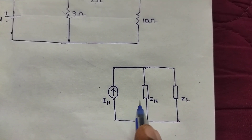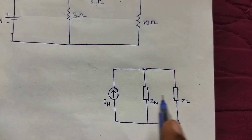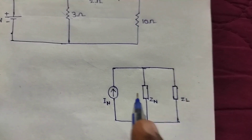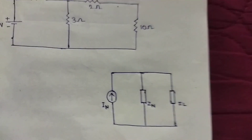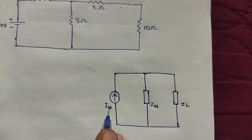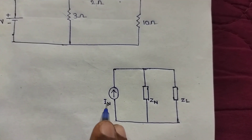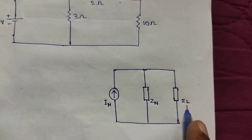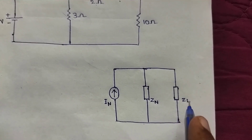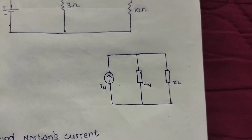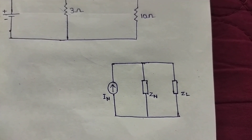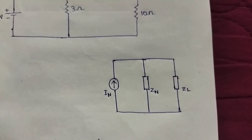IN is parallel to ZN, and ZN is across ZL, the load impedance. IN is Norton's current, ZN is Norton's impedance, and ZL is load impedance. Using these three terms, we will find Norton's theorem.